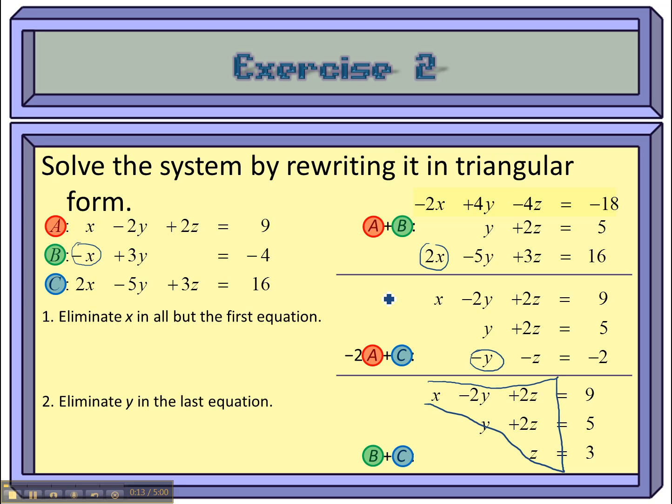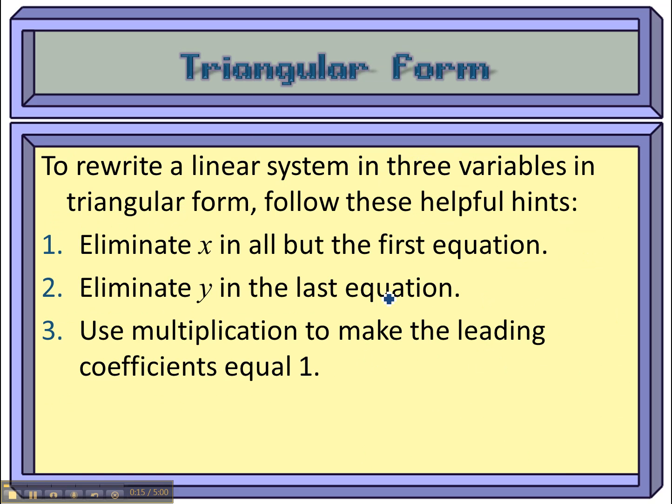And the order that you want to do them in is right here. So to put a linear system of equations that has three variables in triangular form, you first want to eliminate the x variable in all but the first equation, it gets to stay.